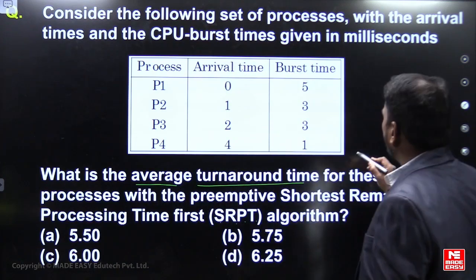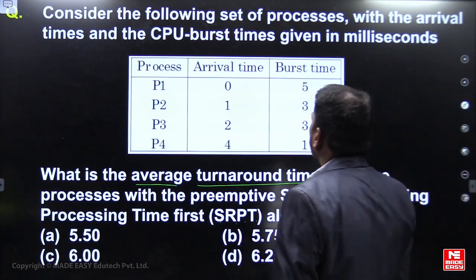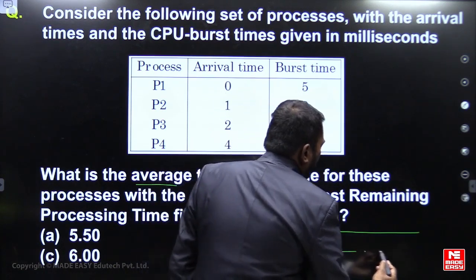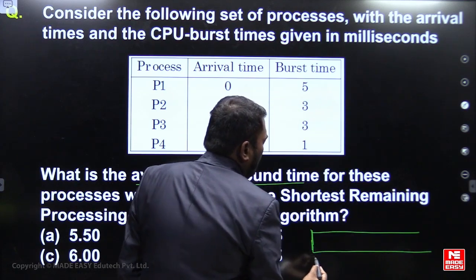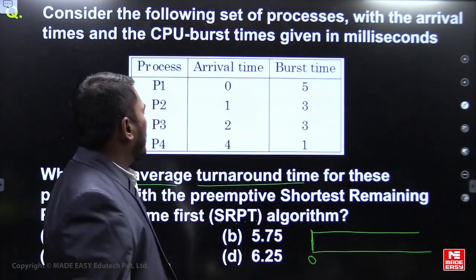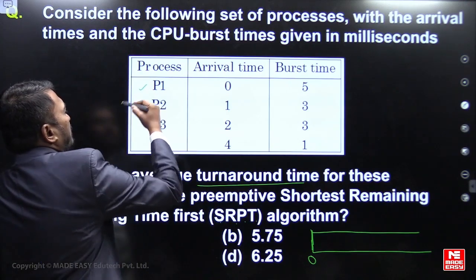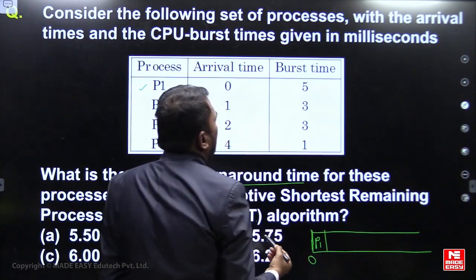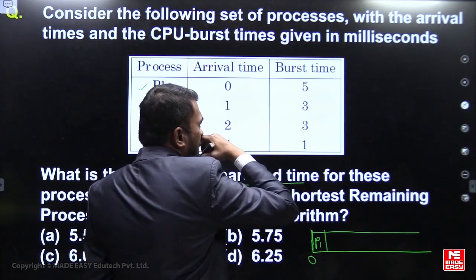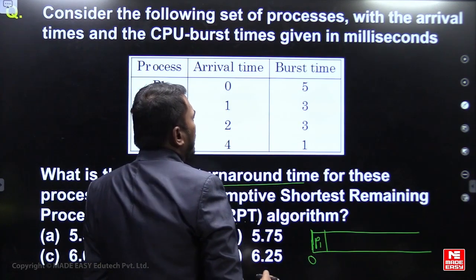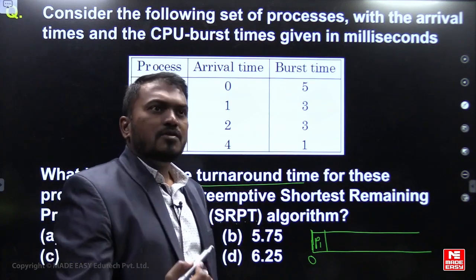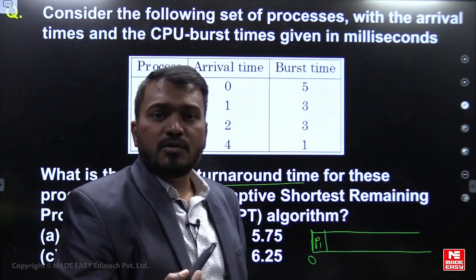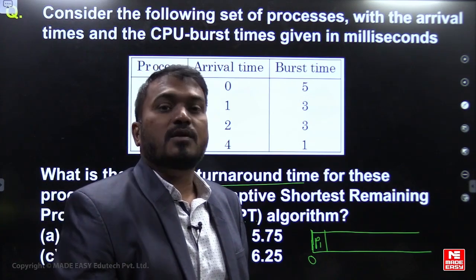He is asking you to find out the turnaround time, so first make the Gantt chart. The time always starts at 0. At time 0, only P1 is available. P1 requires 5 units of time, but in SRTF, for every unit of time you need to check who is the shortest job.